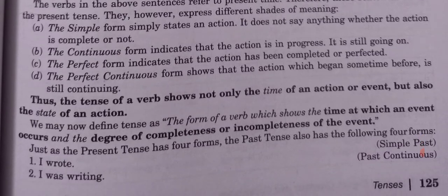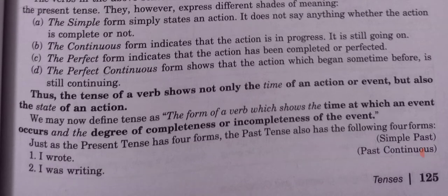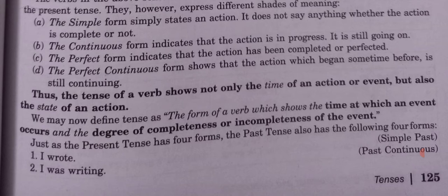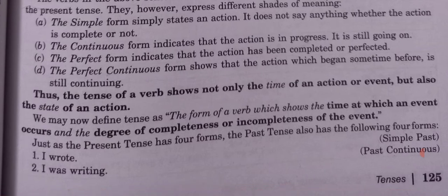The continuous form indicates that the action is in progress — it is still going on. The perfect form indicates that the action has been completed or perfected. The perfect continuous form shows that the action which began sometime before is still continuing. Thus the tense of the verb shows not only the time of an action or event but also the state of the action.